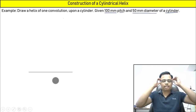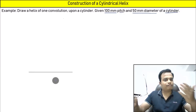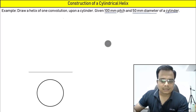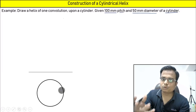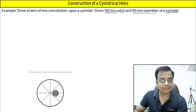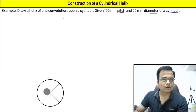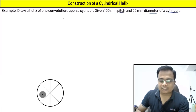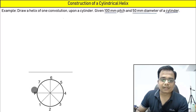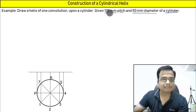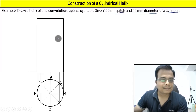The cylinder is seated on a horizontal plane, so the front view is a rectangle and the top view is a circle. Let us divide the circle into eight parts — you can go for 12 equal divisions also, but I'm going to do eight equal divisions. The radius here has to be taken as 25 mm since the diameter is 50. The height of the cylinder has to be taken as 100 mm — that is the pitch. Now let us project lines from all these points and make the front view.